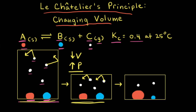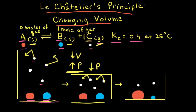According to Le Chatelier's principle, the net reaction is going to go in the direction that relieves the stress. So if the stress is increased pressure, the net reaction is going to try to move in the direction that decreases the pressure. Looking at the equation, the two solids aren't really contributing to the pressure, so it's only gas C that we need to worry about. There is one mole of gas C on the product side and zero moles of gas on the reactant side. So if the net reaction went to the right, we'd be going from zero moles of gas to one mole of gas, which would increase the pressure.